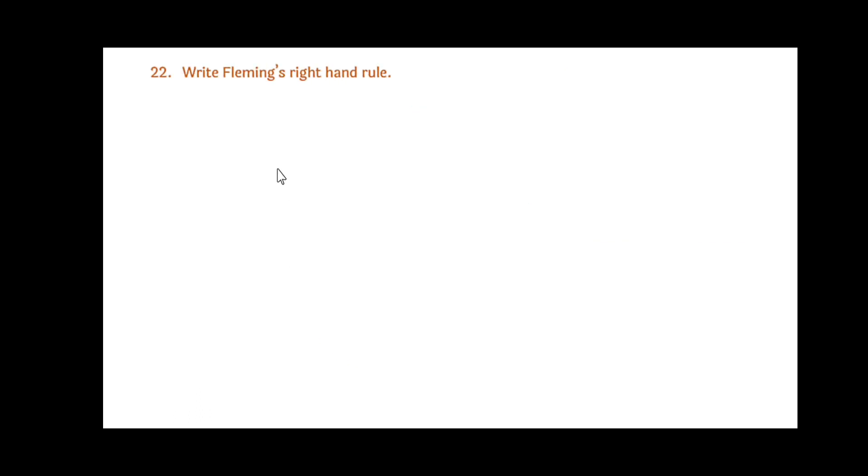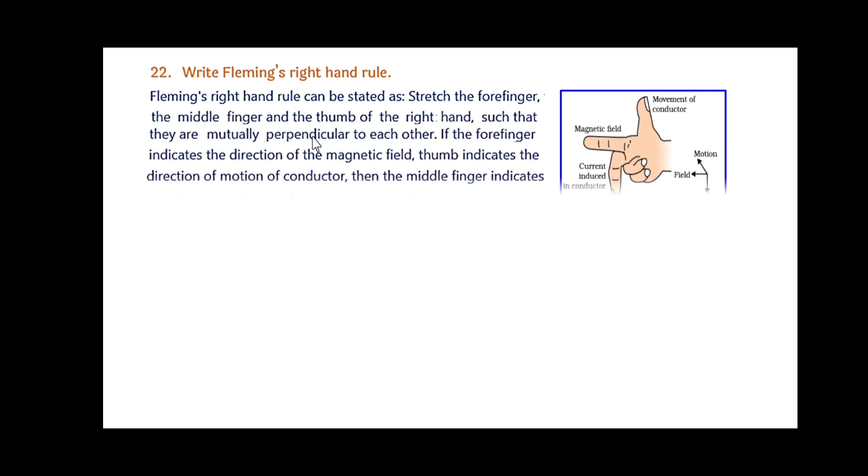Write Fleming's right hand rule. Fleming's right hand rule can be stated as: stretch the forefinger, the middle finger, and the thumb of the right hand such that they are mutually perpendicular to each other. If the forefinger indicates the direction of the magnetic field, the thumb indicates the direction of motion of conductor, then the middle finger indicates the direction of the induced current in the conductor. See the figure.